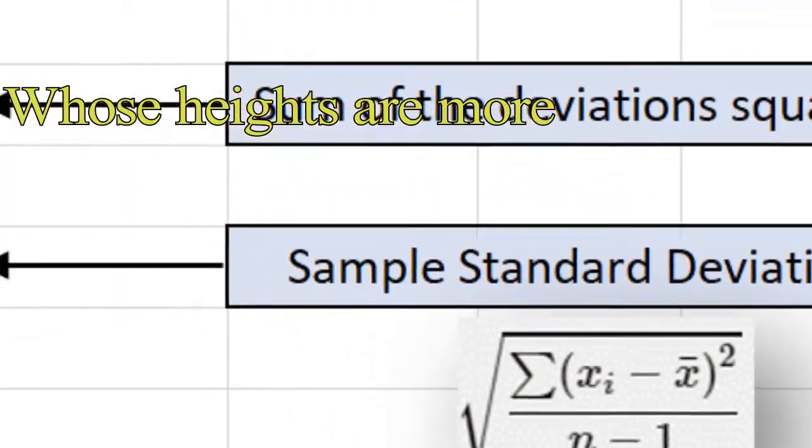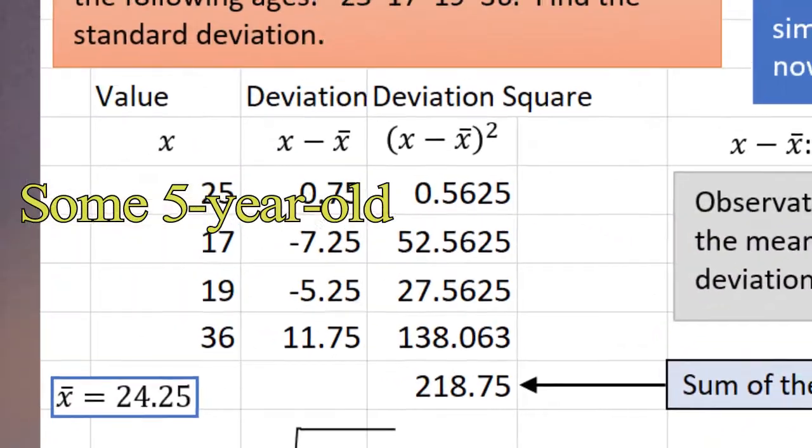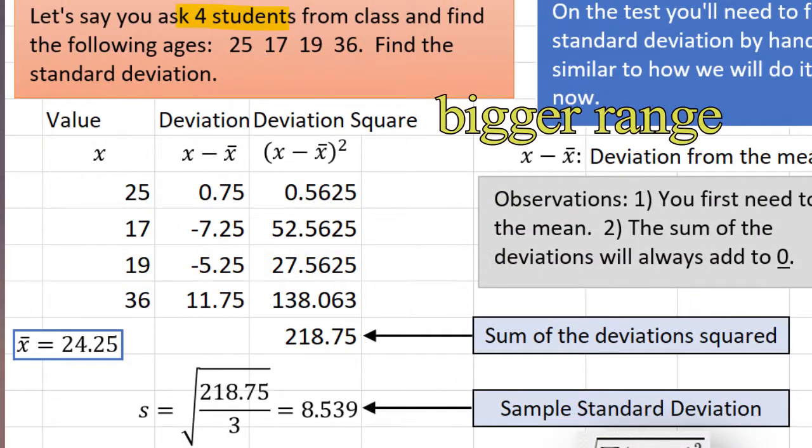Never stop dreamin', cause your future is waitin' and there's nothin' standard but the deviation. Whose heights are more spread out? That is the question. Some five-year-old kids, not the general population.